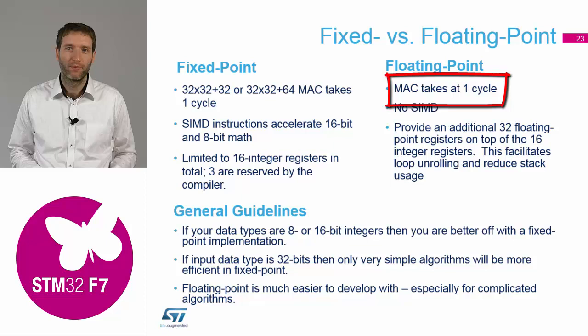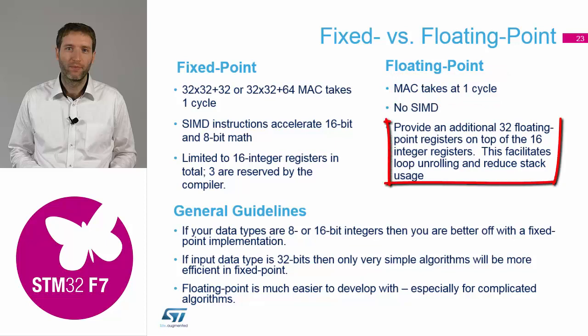There is a big difference on the M4 — it was three cycles. For the floating point, there is also a nice improvement. What is also not so well known is that if you enable the floating point unit in hardware, you get another 32 registers inside the core, which makes life much easier for algorithms to store intermediate results, so you don't need to reload the coefficients all the time.